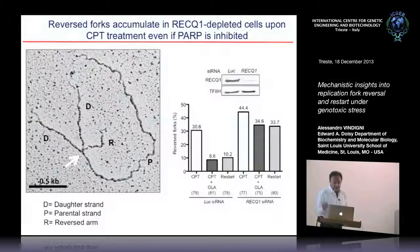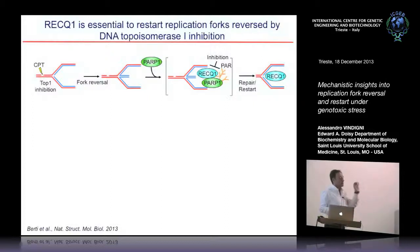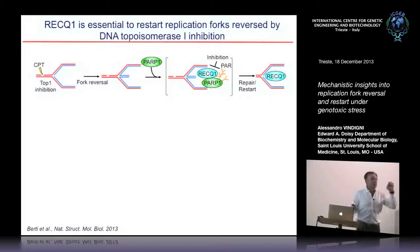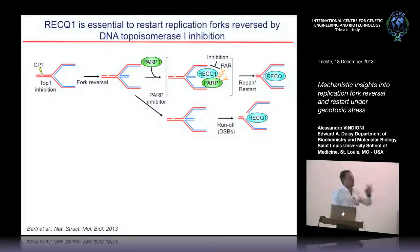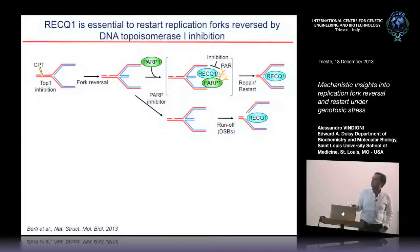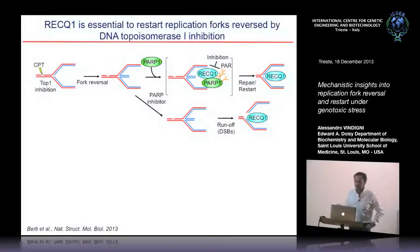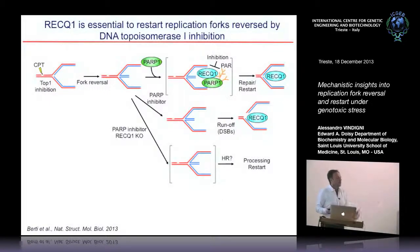This is the mechanism we propose: RECQ1 is the factor important to restart reverse forks, and PARP inhibits RECQ1 to control premature restart before the lesion is repaired. The model predicts that if PARP is inhibited, RECQ1 acts prematurely — restarting forks before repair — leading to accumulation of double-strand breaks. Conversely, if PARP is inhibited in a RECQ1-deficient background, reverse forks cannot restart and double-strand breaks should not accumulate.